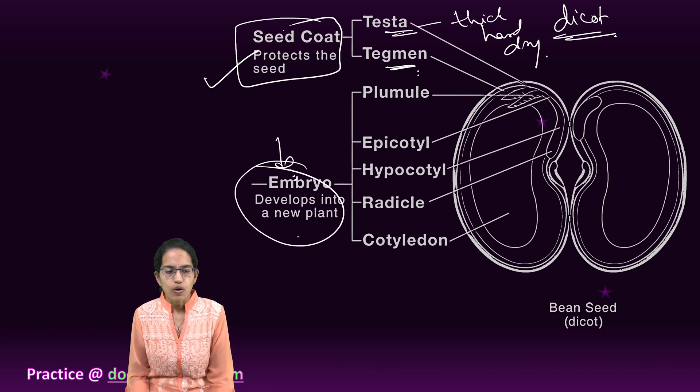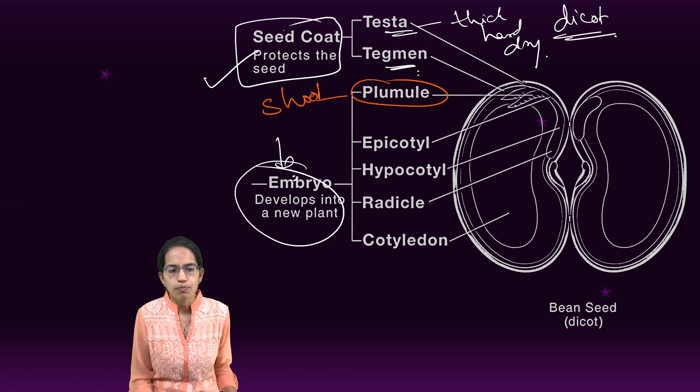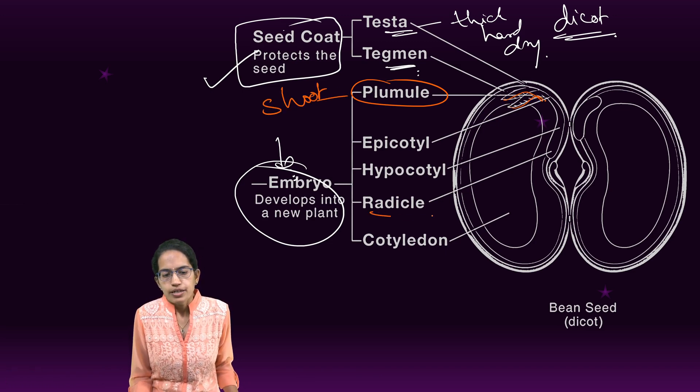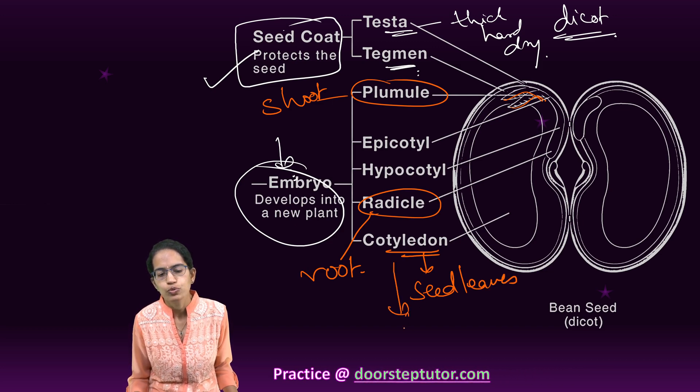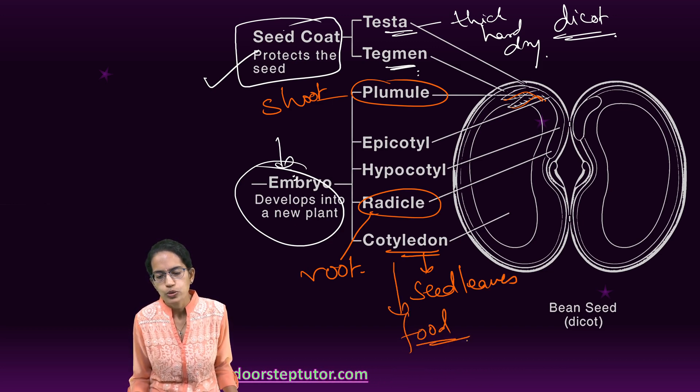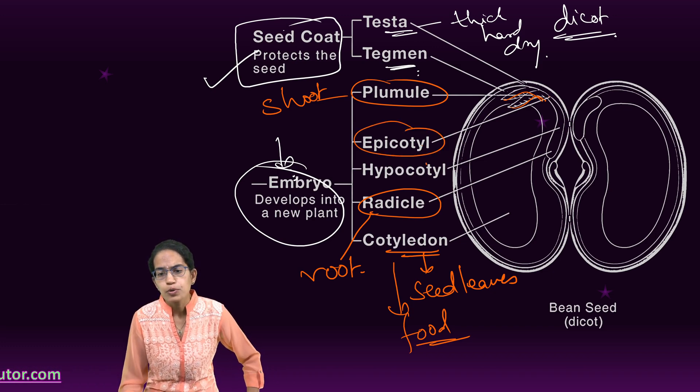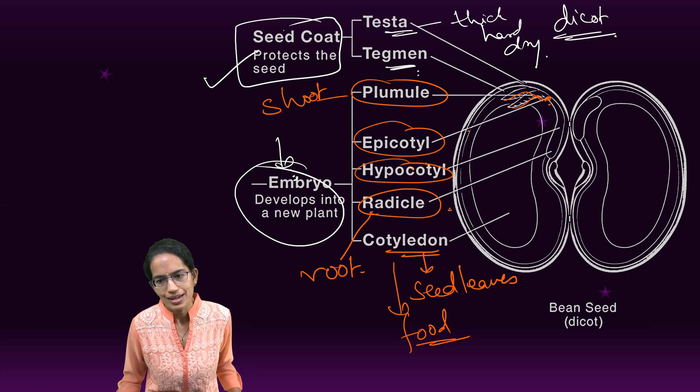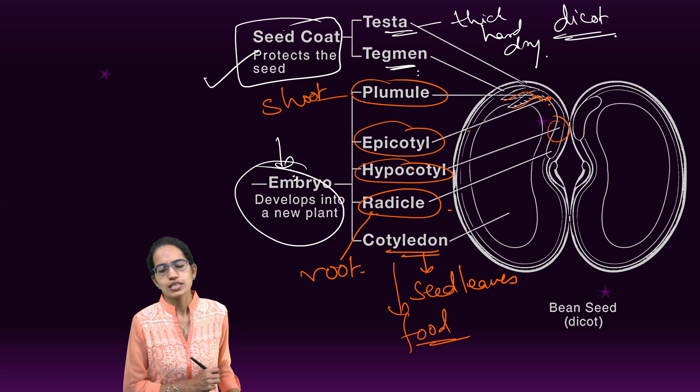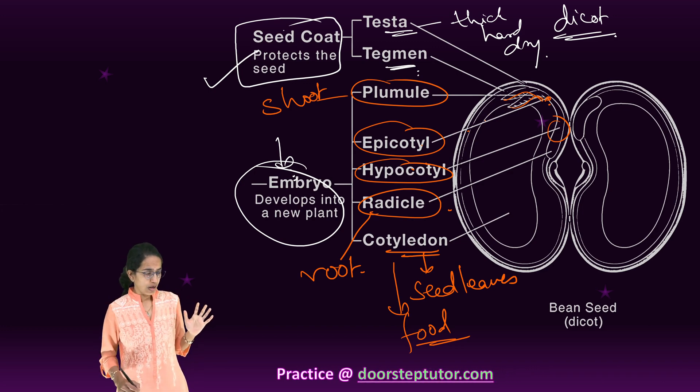The next is the embryo. Embryo in the case of dicot has five divisions. Plumule gives rise to the shoot of the plant. Here are the plumules. Radicle gives rise to the root. Cotyledons are known as the seed leaves and these are where the food is actually stored. So they act as storage center. Epicotyl is the point where the tip of the plumule originates and hypocotyl is the region between epicotyl and radicle. So this is a basic classification that you need to understand in a dicot.